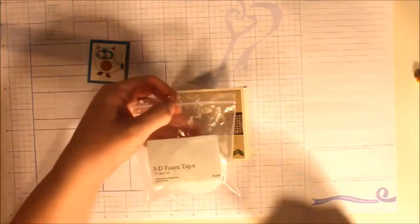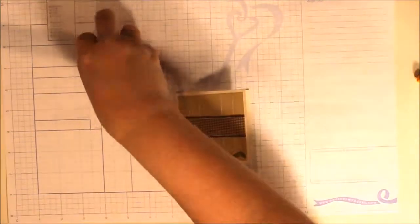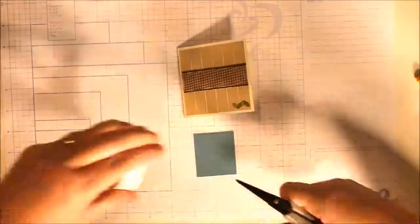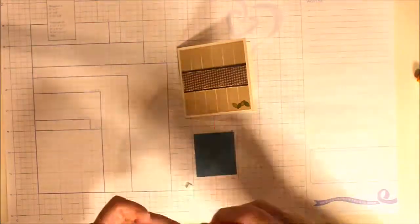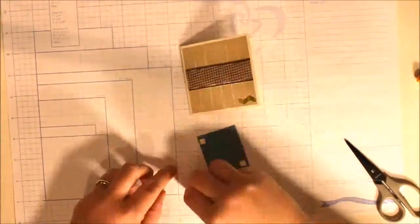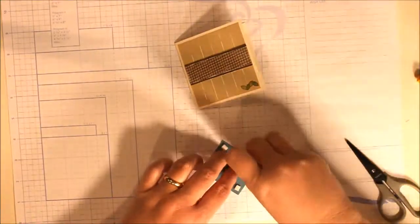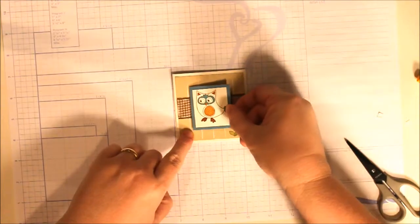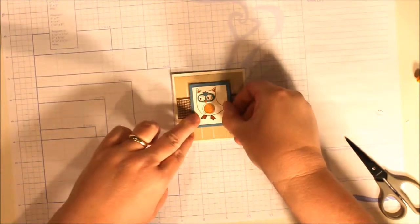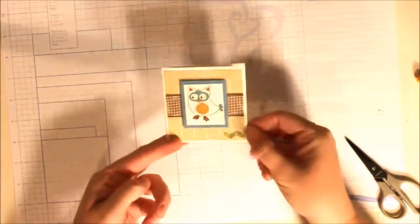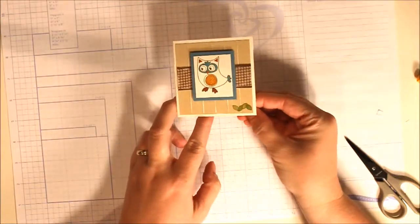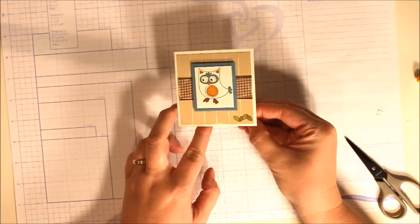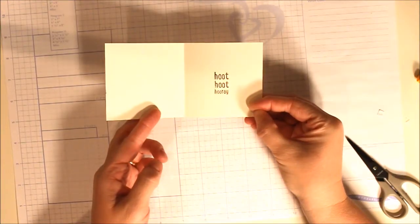Then I'm going to use our 3D foam tape to put on the back of the owl. Stick it right onto the center of our card. And there you have it. The finished product is three and a quarter by three and a quarter. And there's the inside.